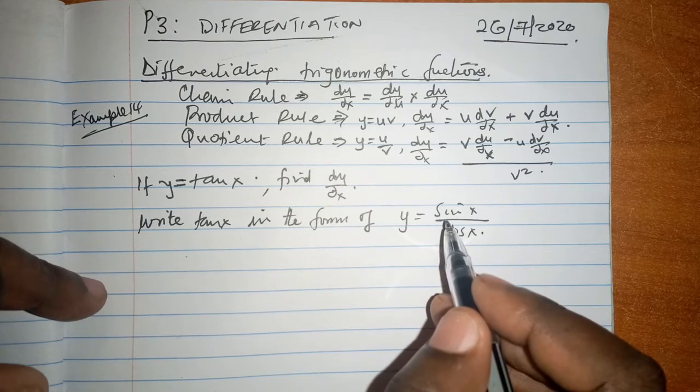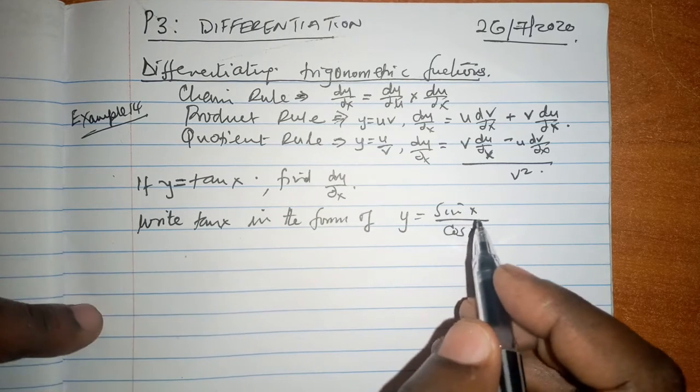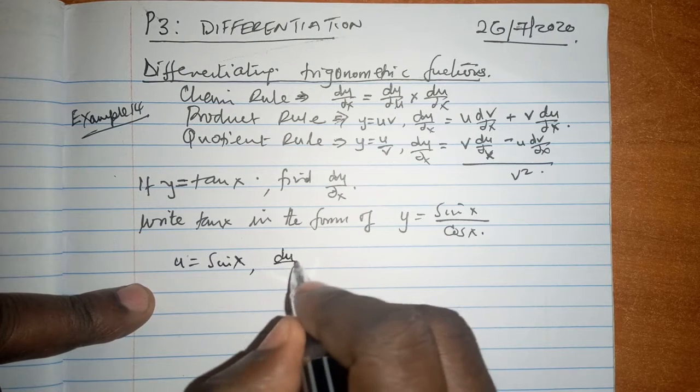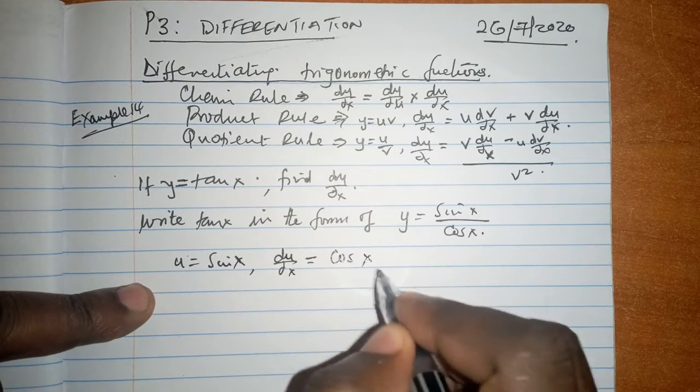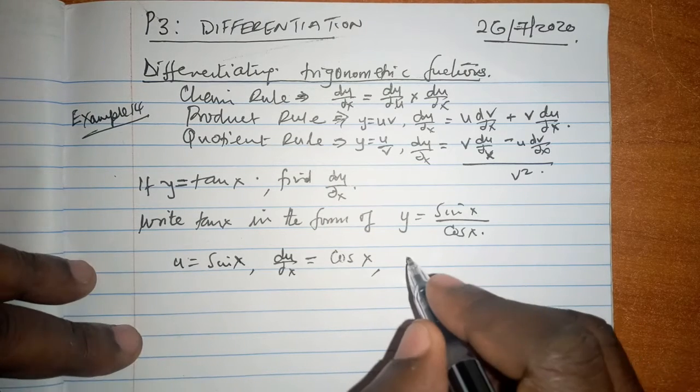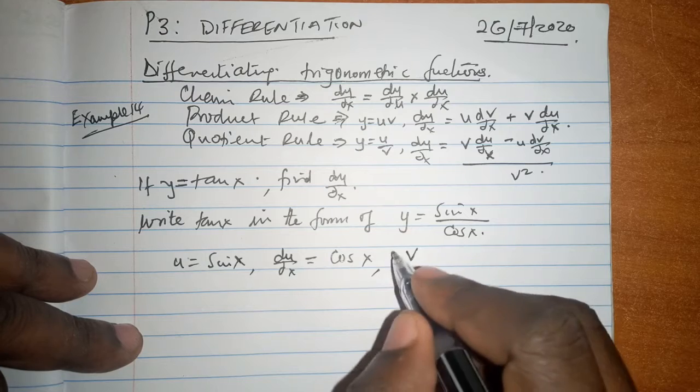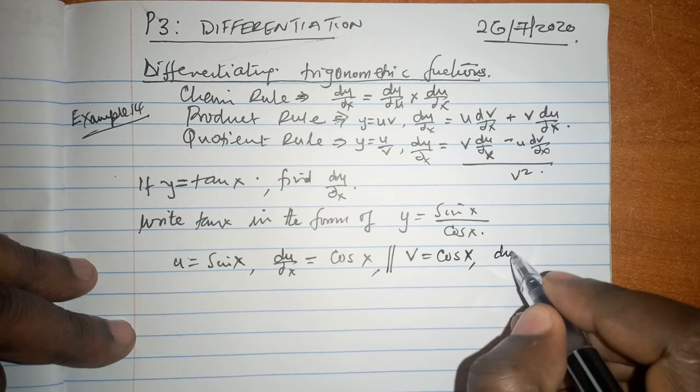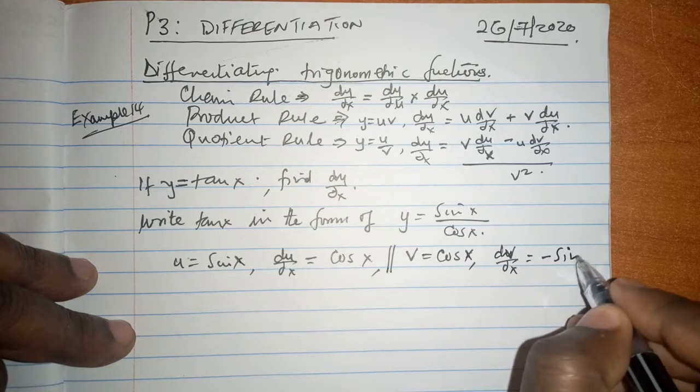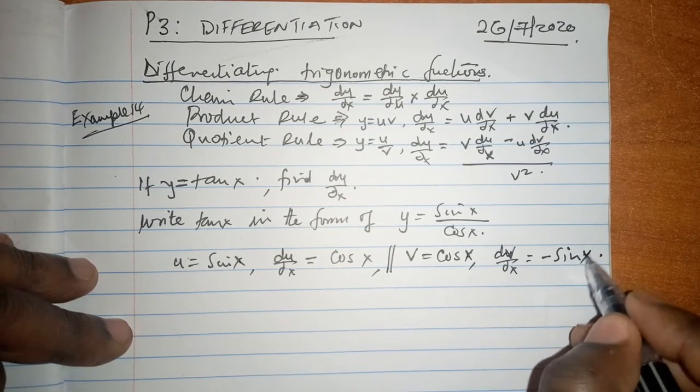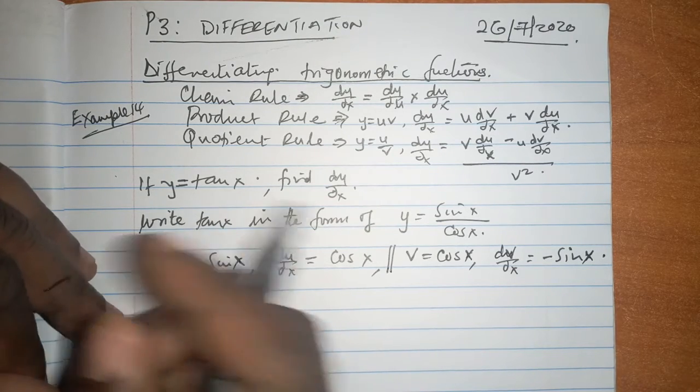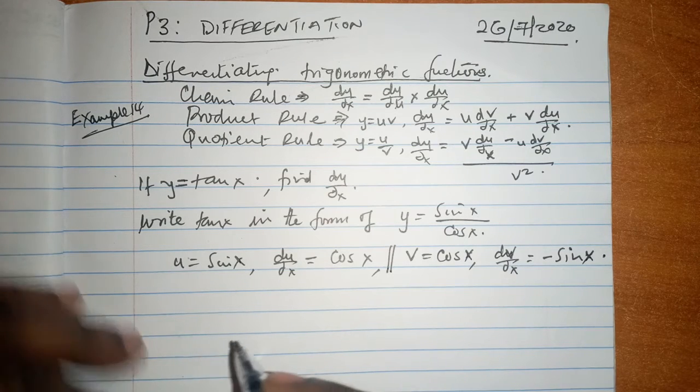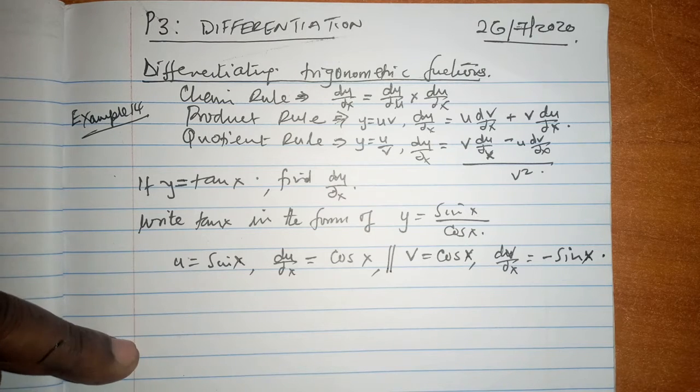But it is perfectly suitable to use the quotient rule, whereby we have the u is the sine of x, and in this case du/dx is simply the cosine of x. At the same time v is the cosine of x, and derivative of the cosine of x, dv/dx, is negative sine of x. You can visit my videos to verify this on differentiating trigonometric ratios.